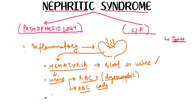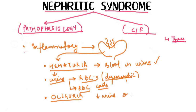Since there is inflammation in the glomerulus, the urine output will decrease, and whenever there is a decrease in the urine output it is called oliguria. So in case of nephritic syndrome we will have oliguria — that is, there will be a decrease in the urine output.